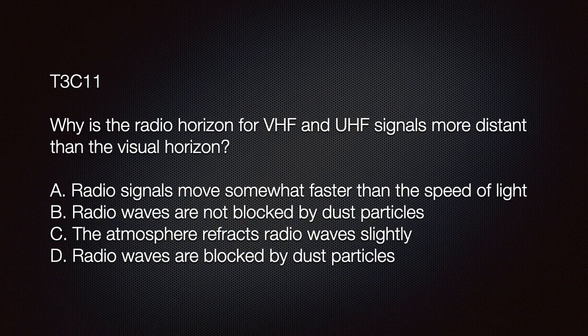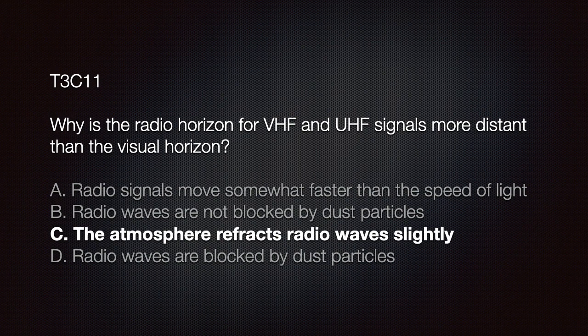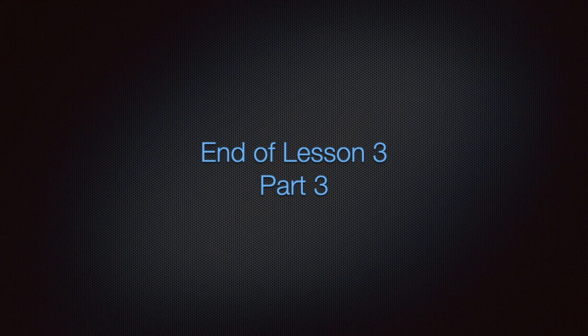The exam question is: why is the radio horizon for VHF and UHF signals more distant than the visual horizon? A) radio signals move somewhat faster than the speed of light; B) radio waves are not blocked by dust particles; C) the atmosphere refracts radio waves slightly. The correct answer is C — the atmosphere refracts radio waves slightly. This is the end of lesson 3, part 3.